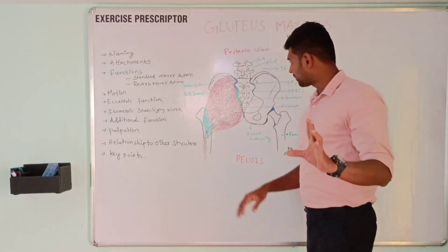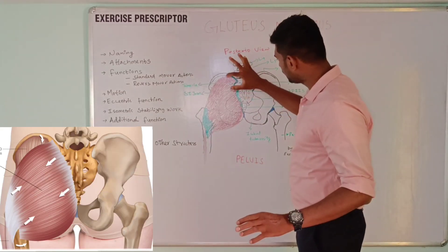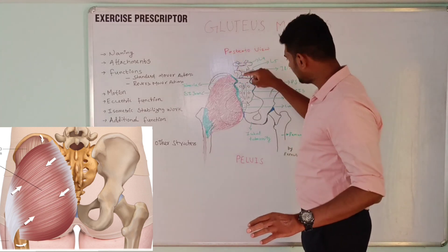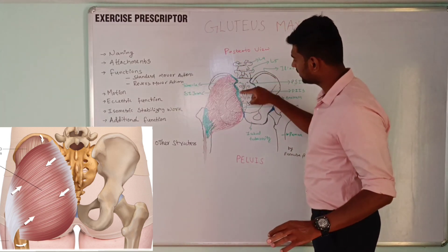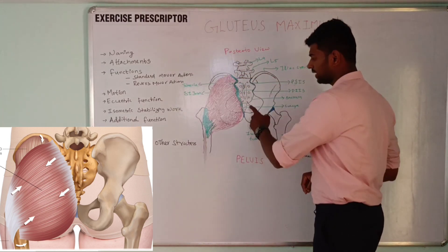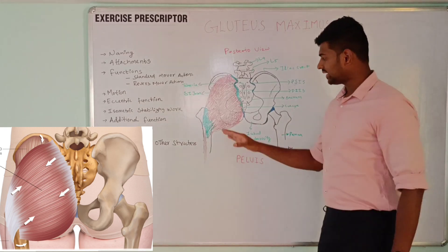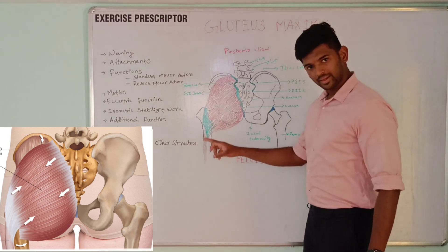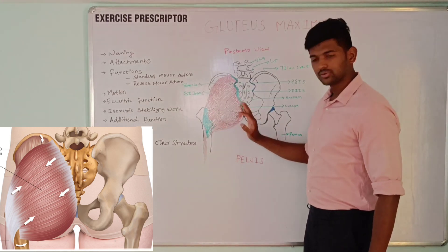Attachments: proximally it attaches over the posterior iliac crest, posterolateral sacrum, and coccyx. Distally it attaches over the iliotibial band and ischial tuberosity.